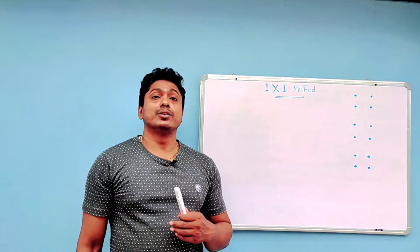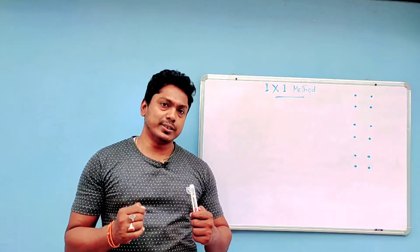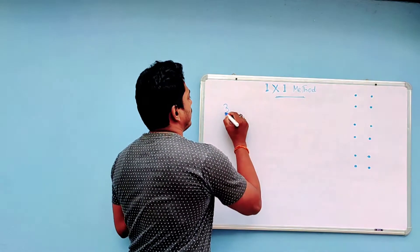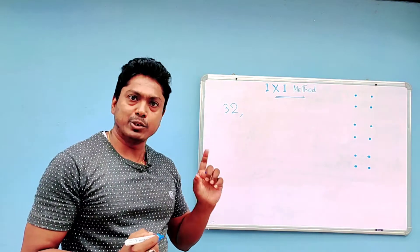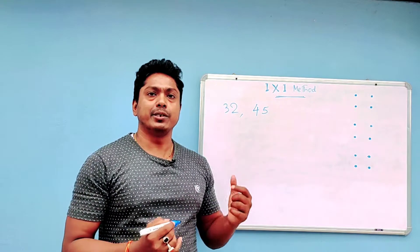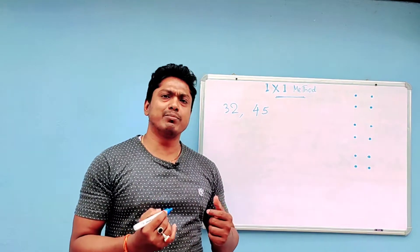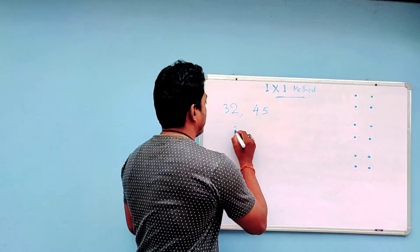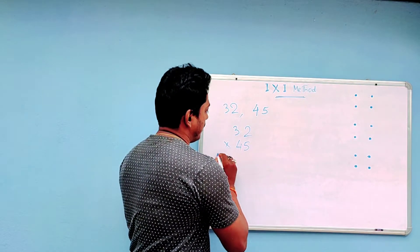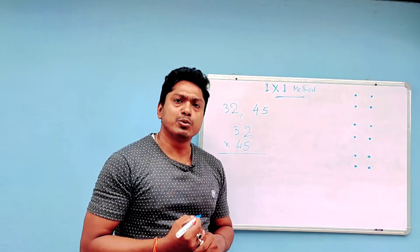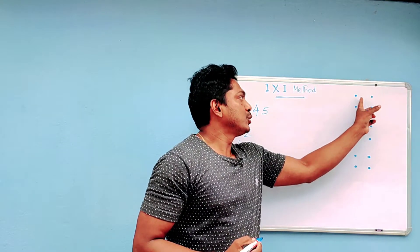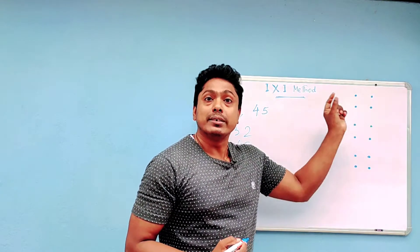First we'll discuss the IXI method so that we can multiply a two-digit number with another two-digit number. Let's take two numbers: 32 and 45. We have to multiply 32 and 45. So 32 multiplied with 45. First of all, it's called the IXI method. These two dots are representing two digits.